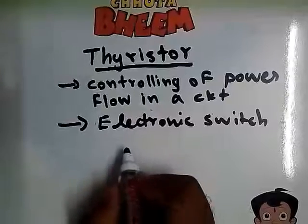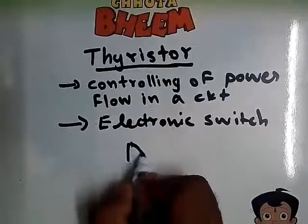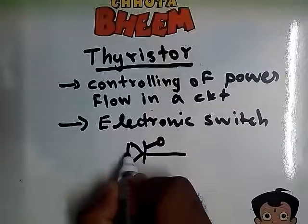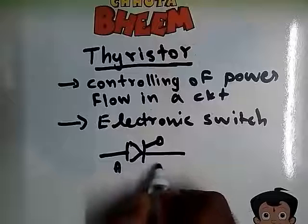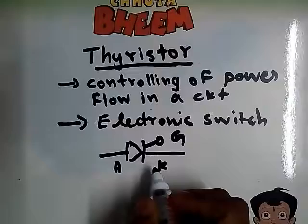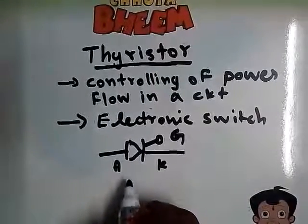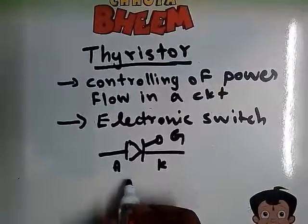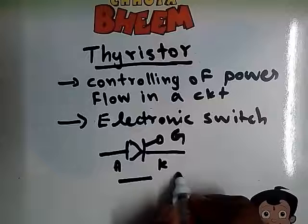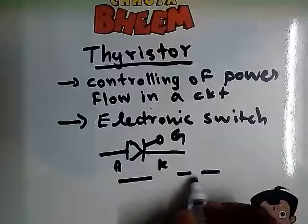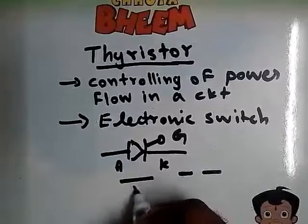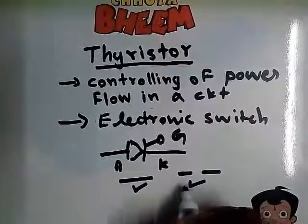Symbolically, we can represent the Thyristor as shown here. It has three terminals: the anode, the cathode, and the gate terminal. By some turn-on methods, if the Thyristor is in the ON condition, it acts as a short circuit, and in the OFF state it acts as an open switch — just like a switch with two stable states, ON and OFF.